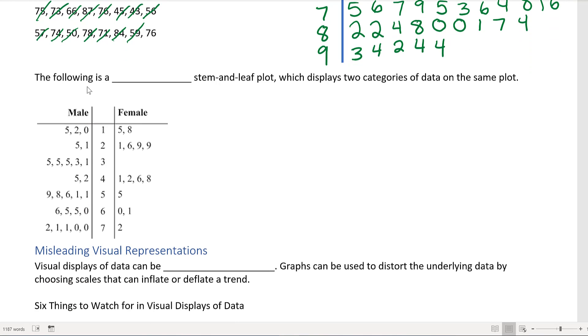Now the next one is an example of a double stem-and-leaf plot, which displays two categories of data on the same plot, the males and the females. Now I don't know really what this data is representing, but let's say for the females we would have a data point for 1 being 15 and 18. The 1 is the tens digit for both the 5 and the 8. For the male numbers, the 1 is the tens digit for the 5, the 2, and 0, so that would be 15, 12, and 10.